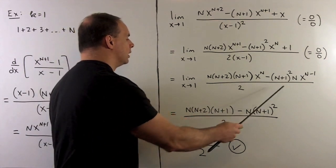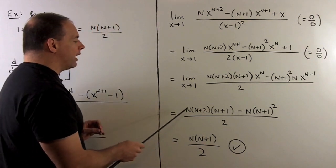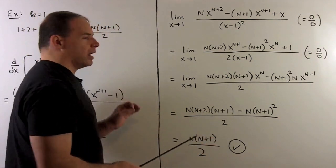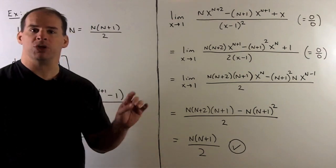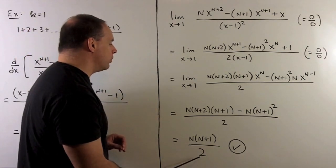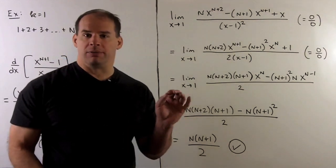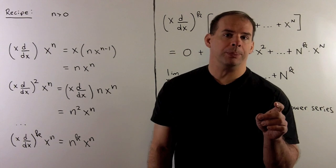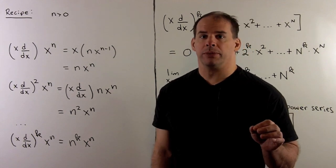Now we could factor out an n and an (n+1) from each term. That leaves us with (n+2) - (n+1), which is 1, so we get n(n+1)/2, and that verifies our formula from before.